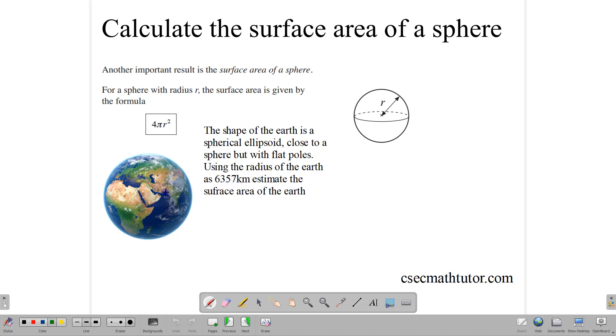Now, the Earth is not a sphere. The correct name, as geologists say, is a spherical ellipsoid. So it's round, but it's flat at the top and the bottom, or the poles. So it doesn't make it a true sphere, but we can use that formula to estimate the area.